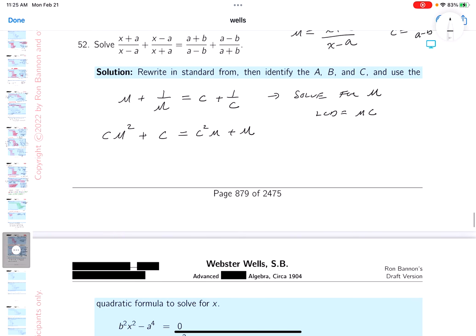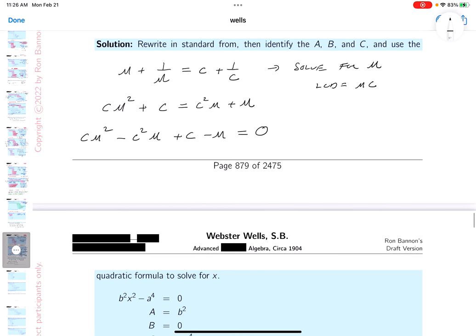Well, it doesn't look so bad. I'm going to rewrite it. And to do that, I guess I've got to do something, right? So, let's take a look at this. cu squared, minus c squared u plus c minus u equals 0. Let's see if I did that right. cu squared minus c squared u, and then c minus. Yeah, it looks pretty good. Let's keep going. I'm going to keep doing this. And I'm looking at this. I'm seeing cu.